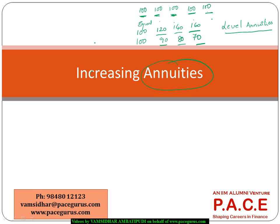We call those things as increasing annuities. Whether it is increasing or decreasing, but on some constant basis, if it is increasing, we call those kind of annuities as increasing annuities.